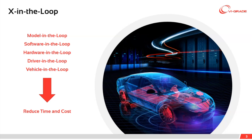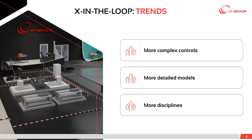When talking about X-in-the-Loop trends we're seeing with customers, the first trend is clear: with ever-increasing applications of advanced driver assistance systems, we have to deal with more complex controls. The second trend is towards more detailed models. When controls development started for vehicle dynamics, many people were using a simple bicycle model, but now people are asking for more detail.